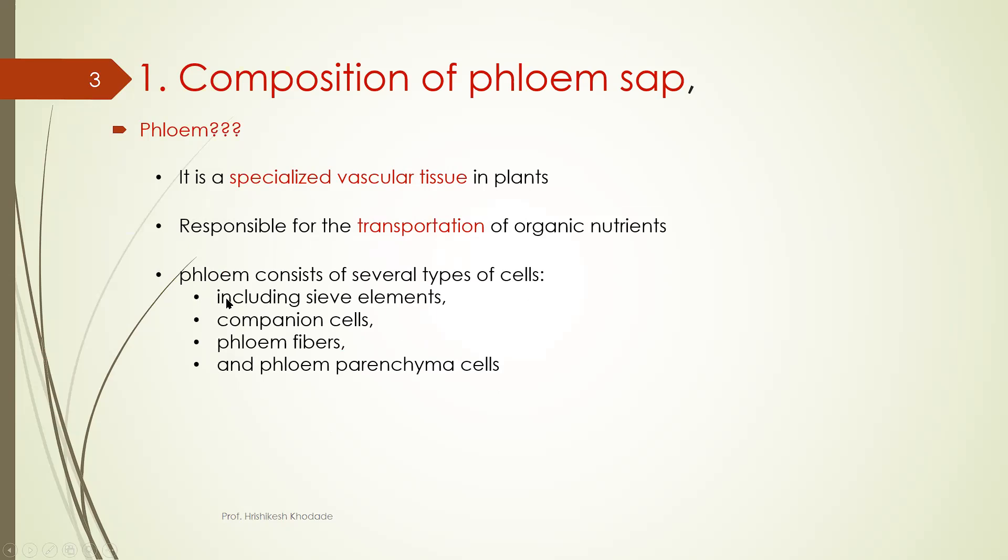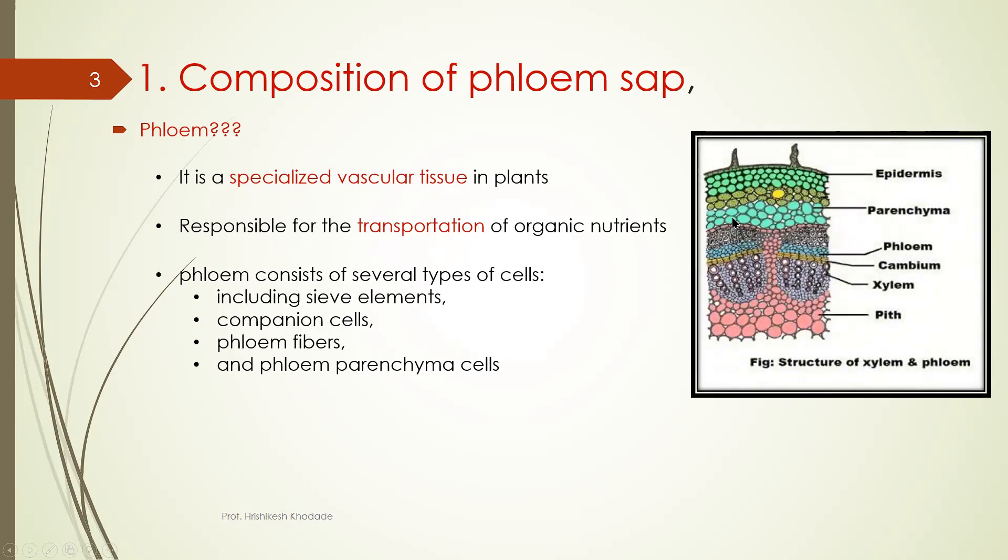To understand this chapter, only two cells are sufficient that is sieve element and companion cell. We will discuss in detail about them. But first of all, when you take transverse section of your plant stem region,